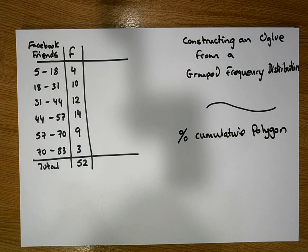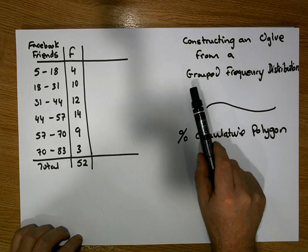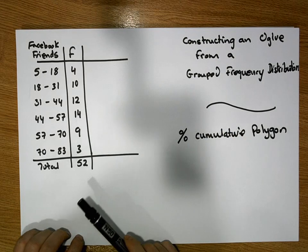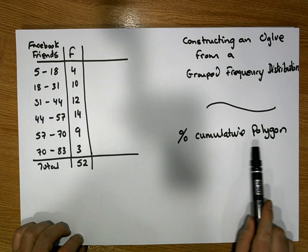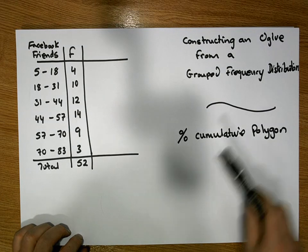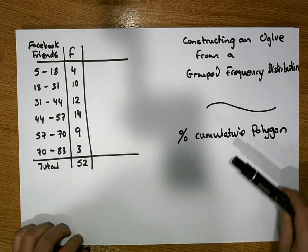Hi guys, this is Jonathan Lambert with the Mathematics Development and Support Service at the National College of Ireland. And this short video is going to detail how to construct an ogive from a grouped frequency distribution. An ogive is also known as the percentage cumulative polygon. So these names are used interchangeably.